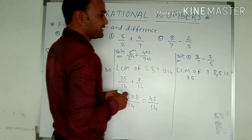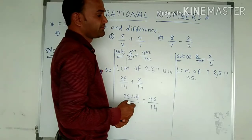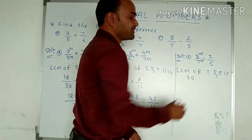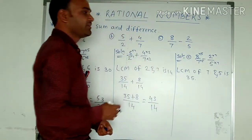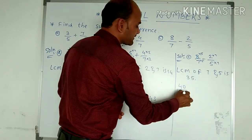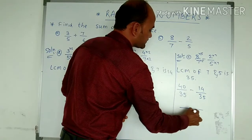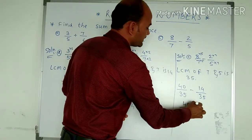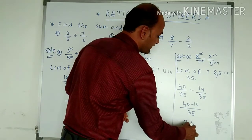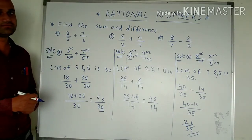We have to make 7 become 35 and 5 become 35. Multiply 7 by 5 to get 35. If you are multiplying 7 with 5, you also multiply with the numerator. So 8 times 5 is 40, divided by 7 times 5 is 35, minus 2 times 7 is 14, divided by 5 times 7 is 35. We take 35 as common and do 40 minus 14. The answer is 26 divided by 35.